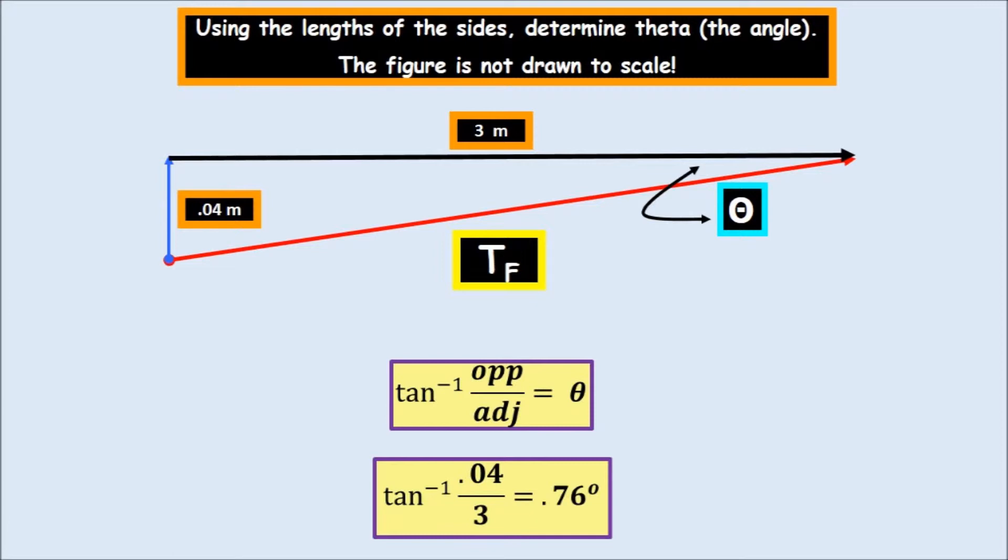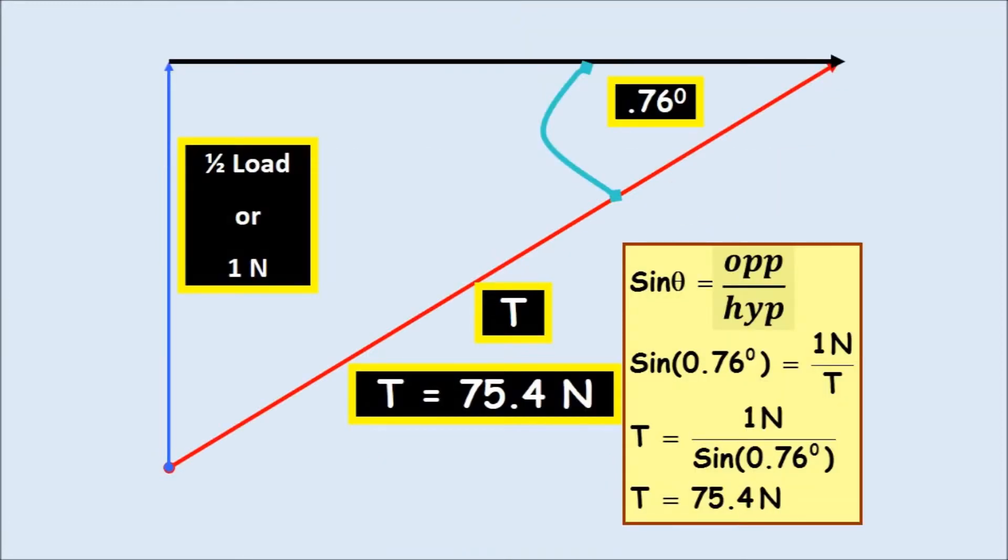It doesn't sag very much. This is not drawn to scale. And watch how a 2 newton bathing suit can cause a rather large tension in the red line. And it would be important to put the little sag in your clothesline before drawing something. And we can see that it's going to be opposite over adjacent. So it's going to be sine 0.76 degrees equals 1 newton over t.